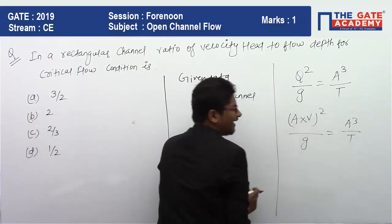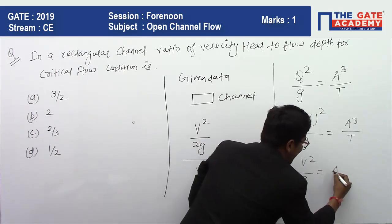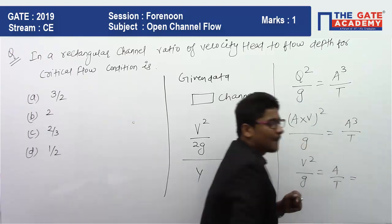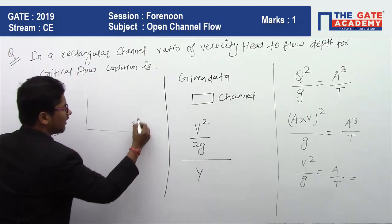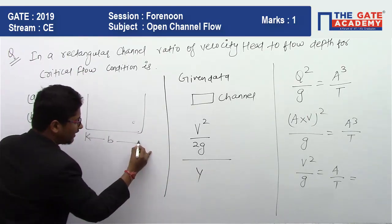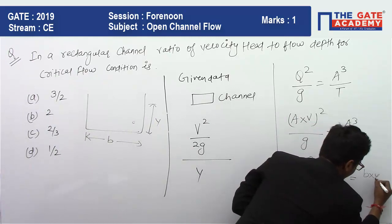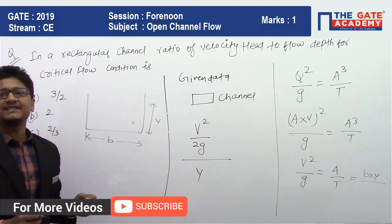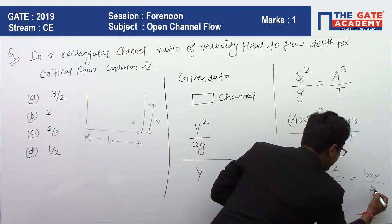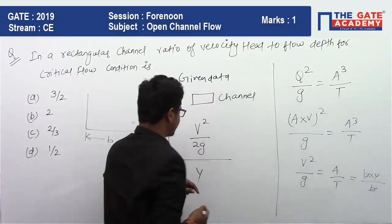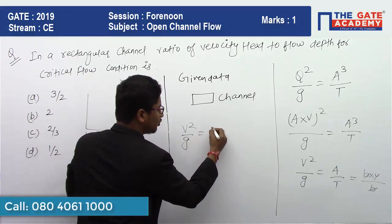Substituting Q = A·v into the critical flow equation, we get A²v² / g = A³ / T. The A² cancels from both sides, leaving v² / g = A / T. For a rectangular channel, A = b·y and T = b, so v² / g = b·y / b = y.